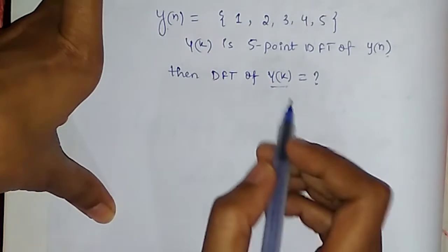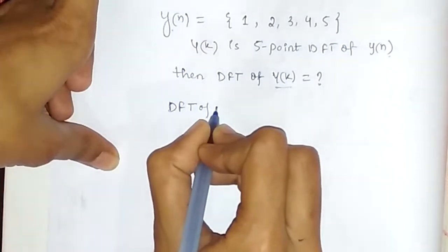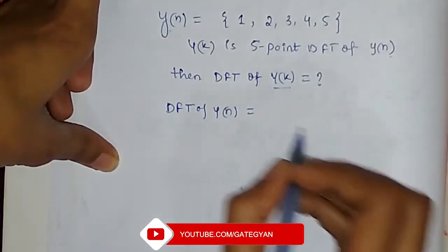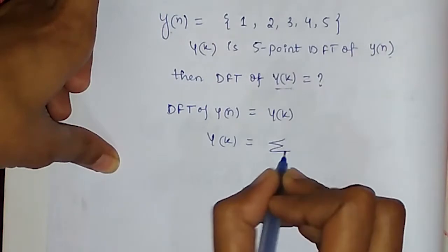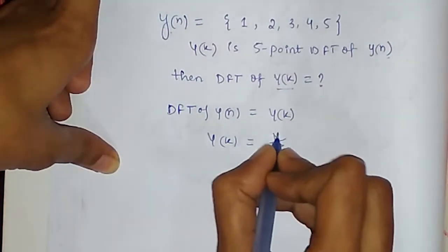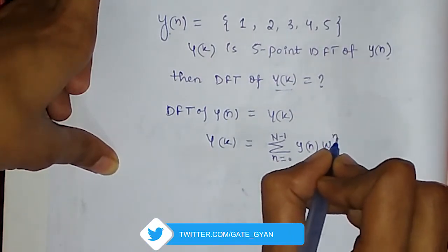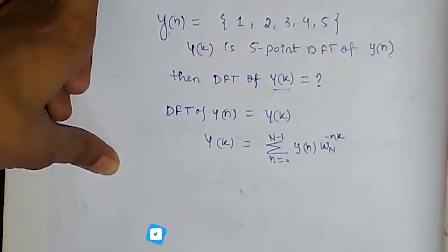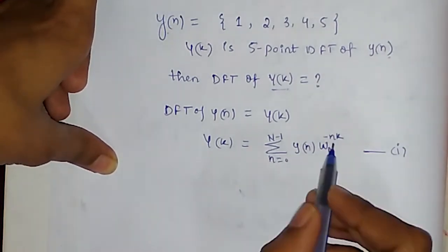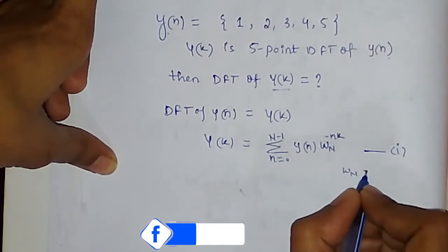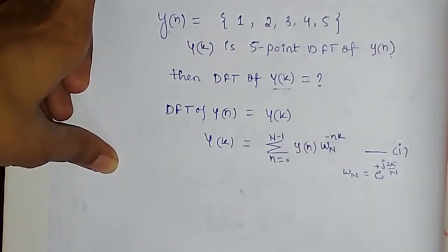The DFT of y[n] is given by Y[k], where Y[k] equals the sum from n=0 to N-1 of y[n] times W_N^(nk). This is the expression for DFT of y[n], where W_N is the twiddle factor given by e^(-j2π/N).